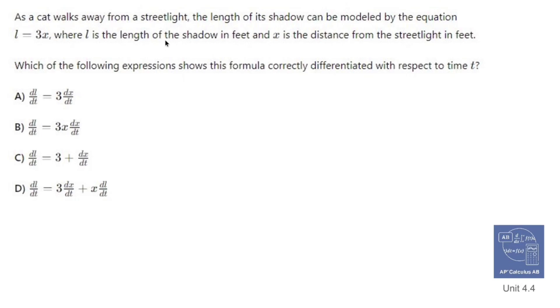As a cat walks away from a street light, the length of its shadow can be modeled by the equation L equals 3x, where L is the length of the shadow in feet and x is the distance from the street light in feet. Which of the following expressions shows this formula correctly differentiated with respect to time t?